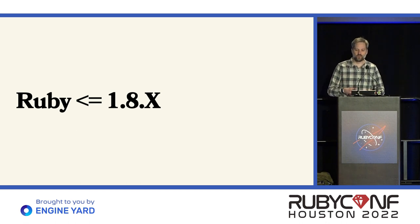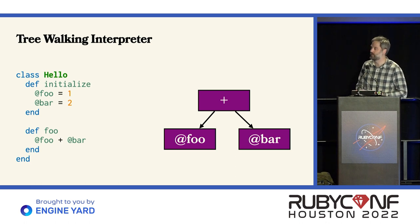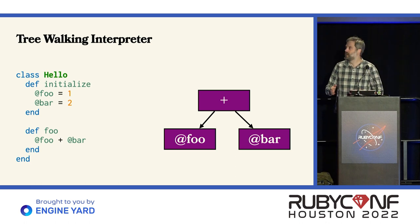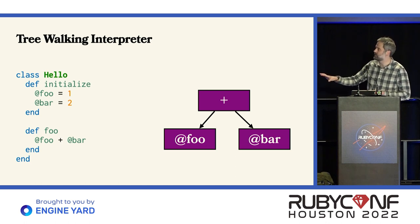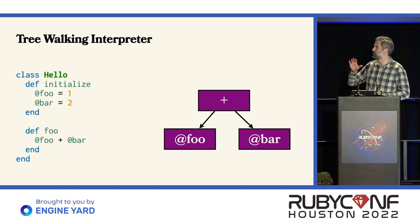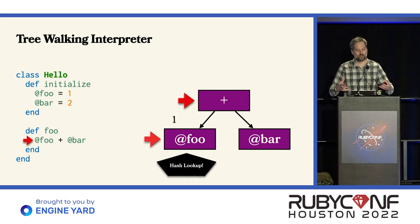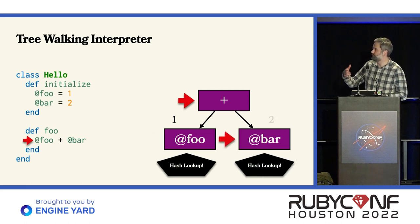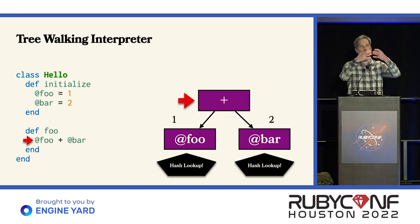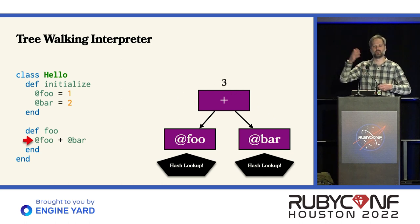Ruby 1.8 and earlier was implemented via a tree-walking interpreter. The way the tree-walking interpreter works is we take your code and turn it into a tree, then walk each node and evaluate those nodes. Here we have a simple example — this tree represents the code inside the method foo, so we have foo plus bar. We want to evaluate that plus node, but we can't yet because we have to evaluate its children. So we evaluate foo — that does a hash lookup to get the value one — and then bar does a hash lookup to get value two. Those values get returned up the tree, plus is able to add them together and return to the caller.